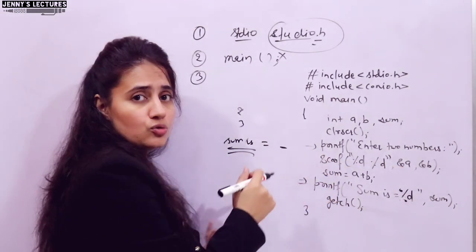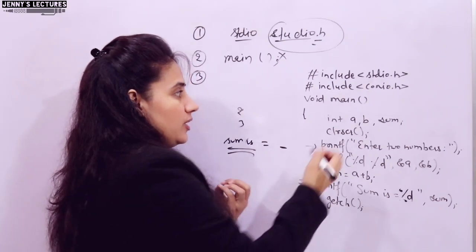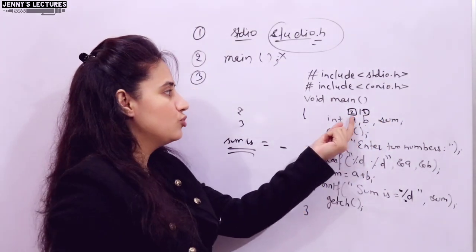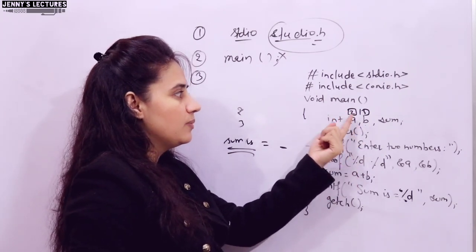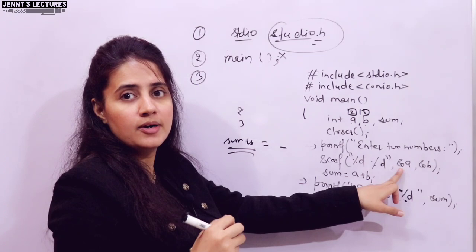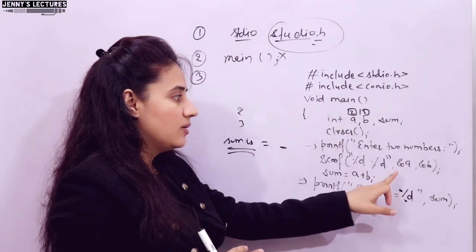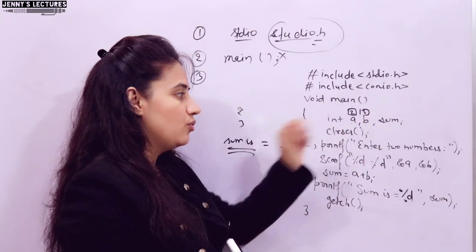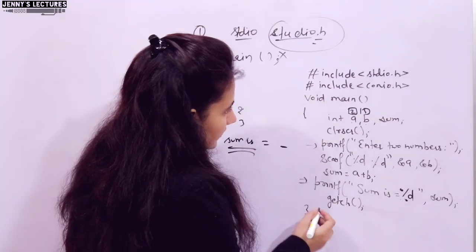The address-of operator is used in scanf because scanf gets input from the user and needs to store it at a specific memory address. When you enter values like 2 and 3 for variables a and b, the address-of operator tells scanf the memory address of a and b so the values can be stored there. That is why we use '&' in scanf, not in printf.